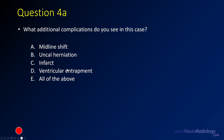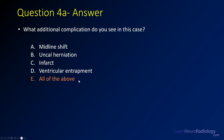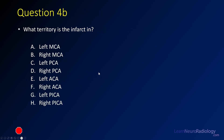Let's look at question 4a: what additional complication do you see? As we went through the explanation, there was definitely midline shift, uncal herniation, infarct, and ventricular entrapment of the right lateral ventricle. So the answer is all of the above — you're seeing all of the potential complications of a subdural hemorrhage.